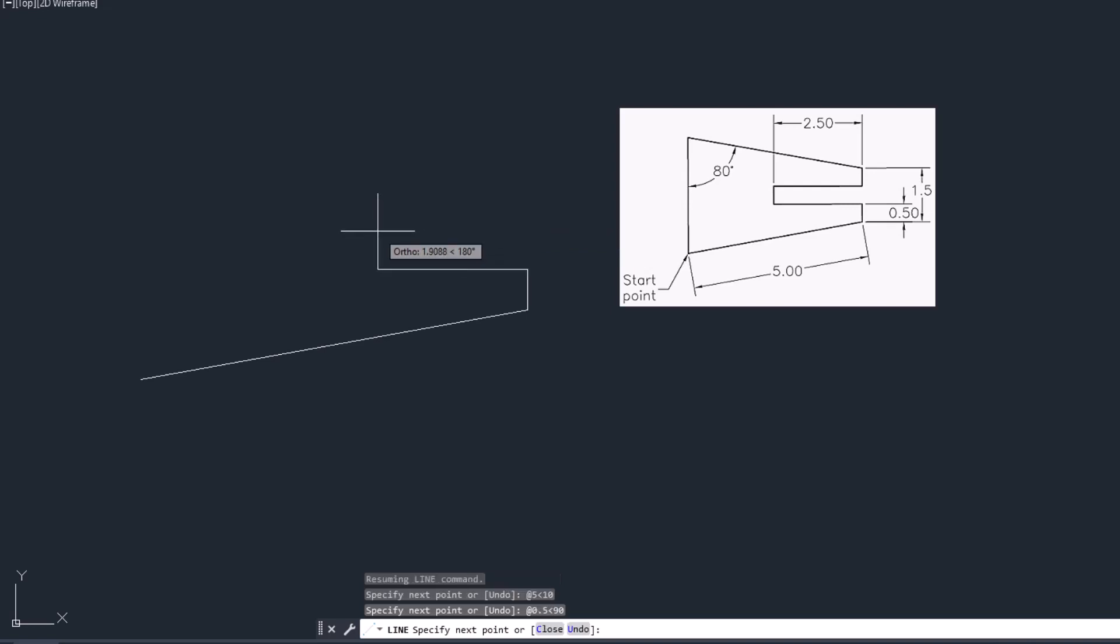Let's move on the left side. Type at the rate, the dimension is 2.5, so 2.5 less than. It is in 180 degree direction. Just look at the command from line. Press enter.